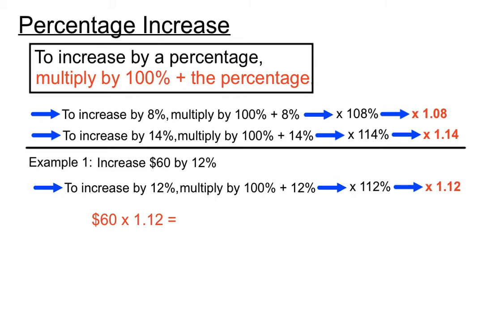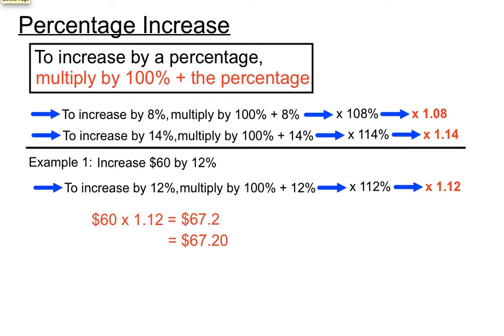$60 times 1.12 on the calculator gives us an answer of 67.2. Since we work in dollars and cents, we put a zero in that next decimal place to get $67.20 as a sensible answer. No one really talks in point two of a dollar — they talk in 20 cents. So $60 increased by 12% ends up being $67.20.